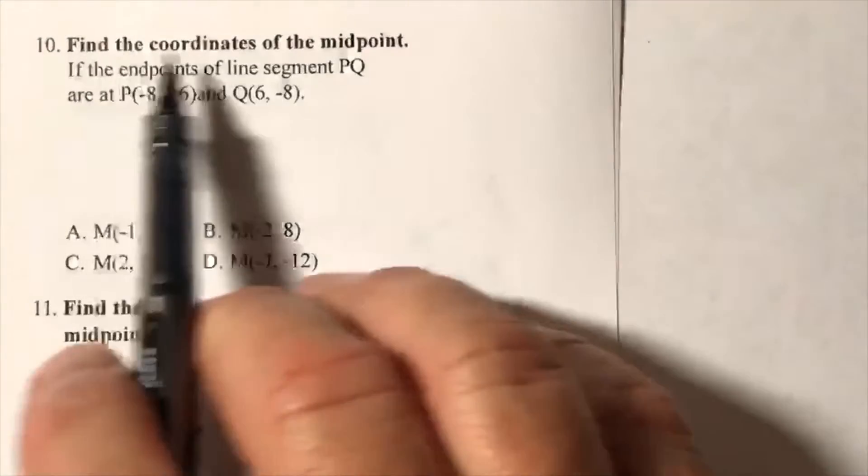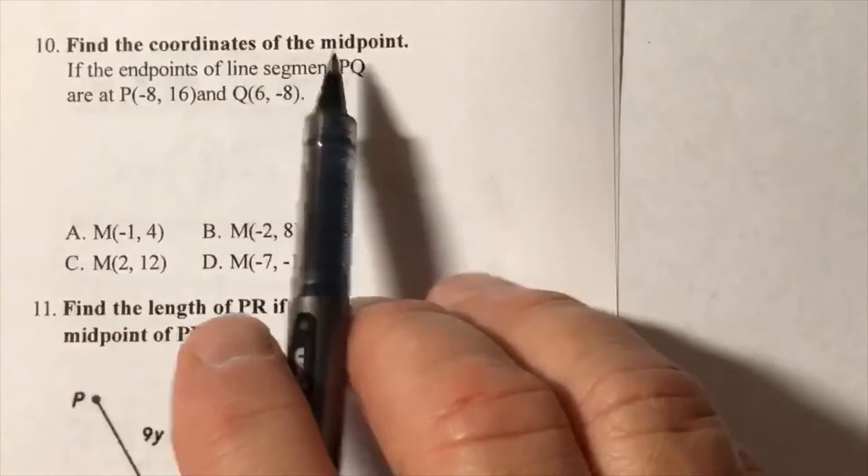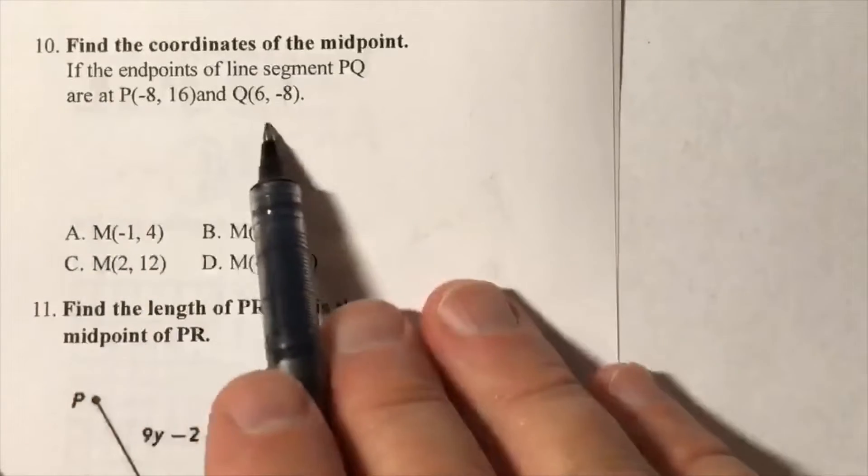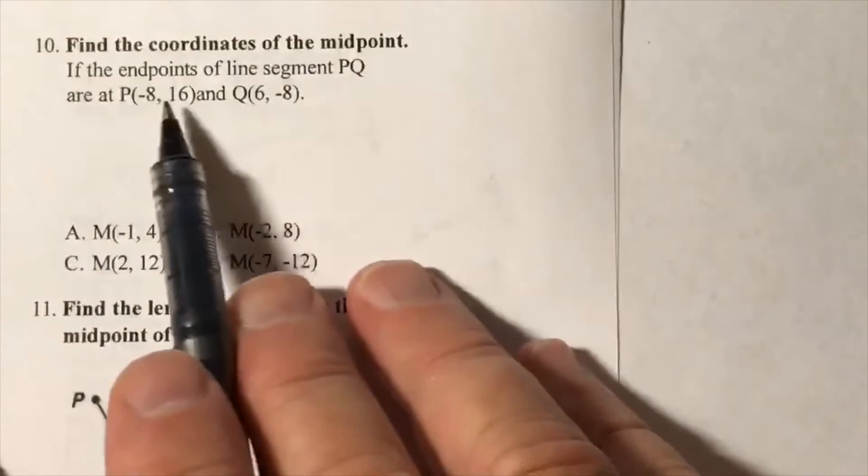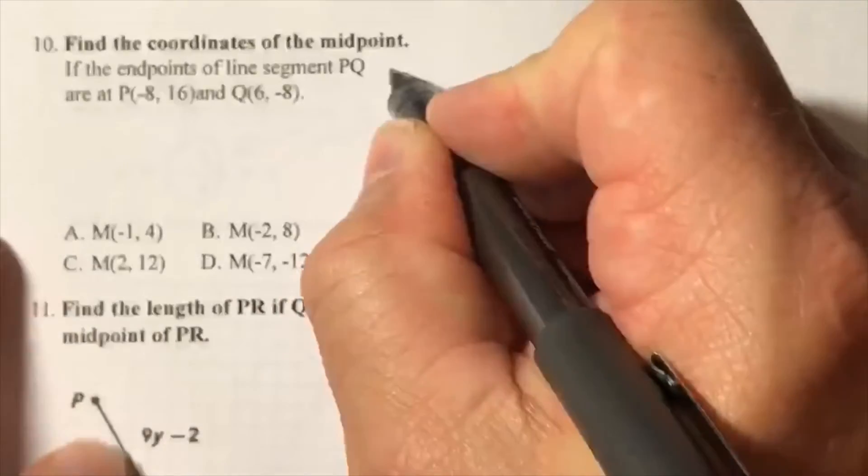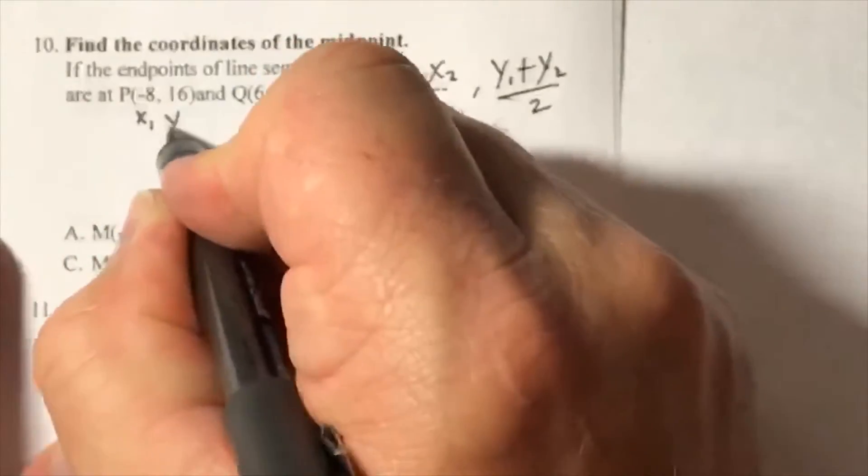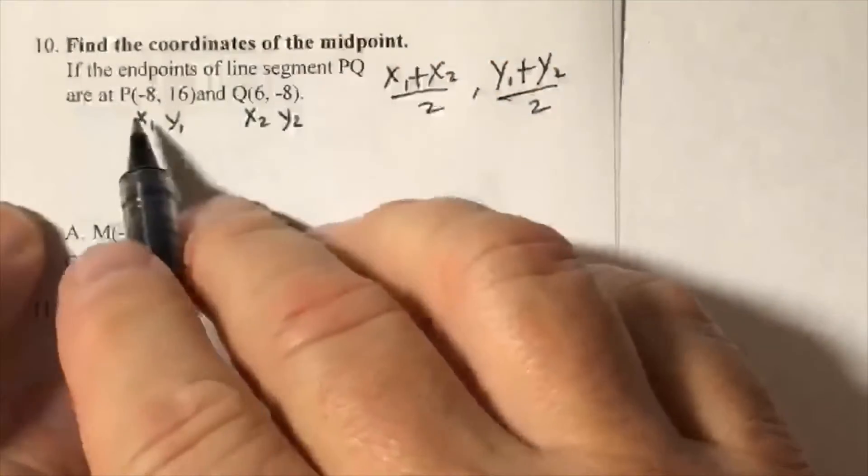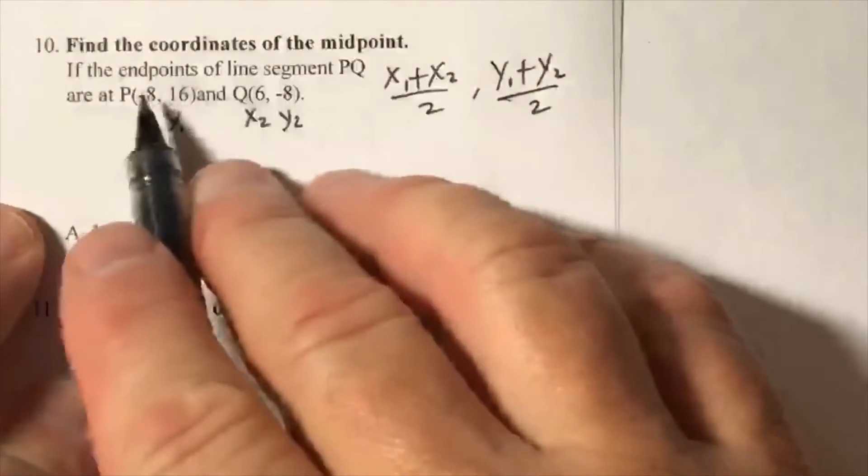Okay, find the coordinates of the midpoint if the endpoints of line segment PQ are here. That's the midpoint formula: x1, y1, x2, y2. Alright, add your x's: negative 8